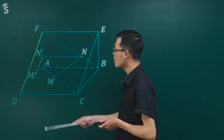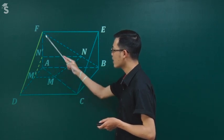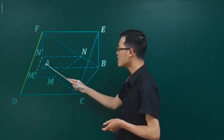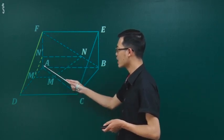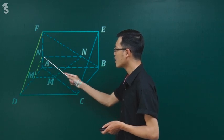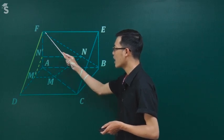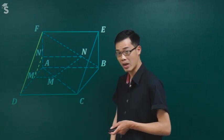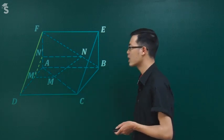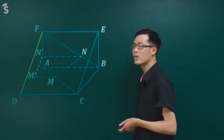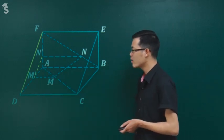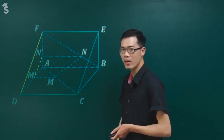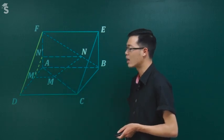Nếu bây giờ bạn lập được tỷ số AN'/AF = AM'/AD mà bằng nhau thì tự nhiên M'N' song song DF. Thế bây giờ bạn phải chứng minh được tại sao hai cái tỷ số này bằng nhau.